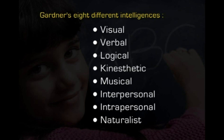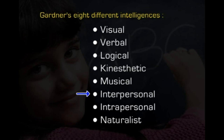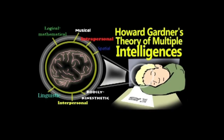These eight intelligences include visual, verbal, logical, kinesthetic, musical, interpersonal, intrapersonal, and naturalist. According to Gardner's analysis, only two intelligences — logical and linguistic — are usually valued and tested in schools, since they are tools to assess academic or scholarly intelligence.